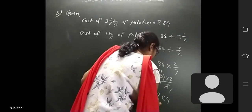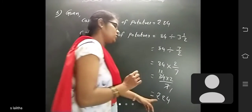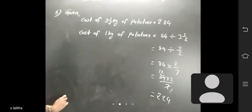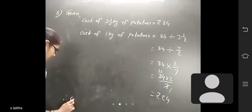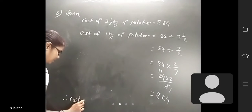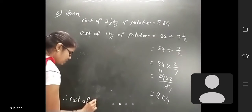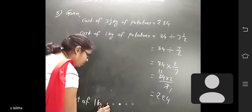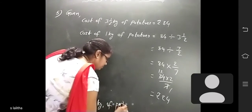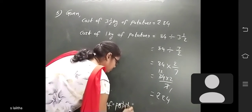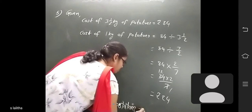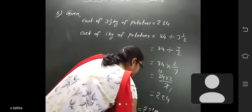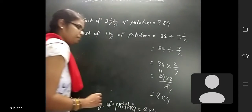So the cost of 1 kg of potatoes is 24 rupees. Therefore, cost of 1 kg of potatoes is equal to 24 rupees.